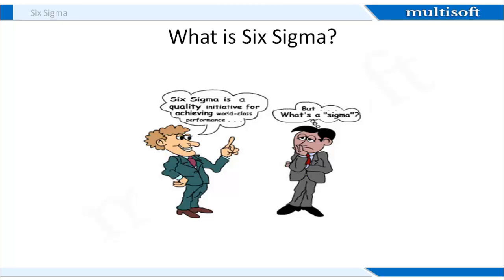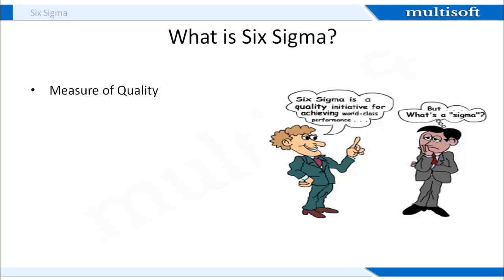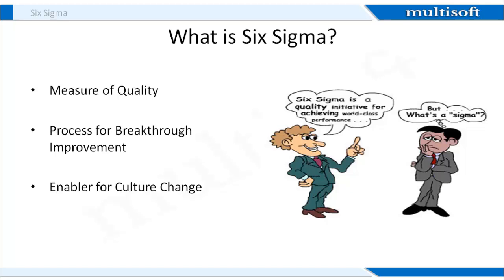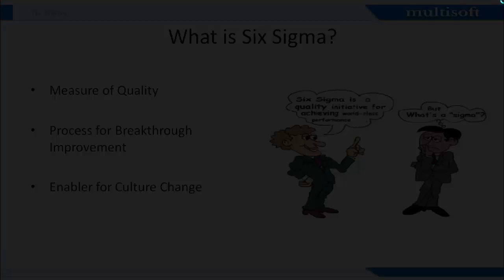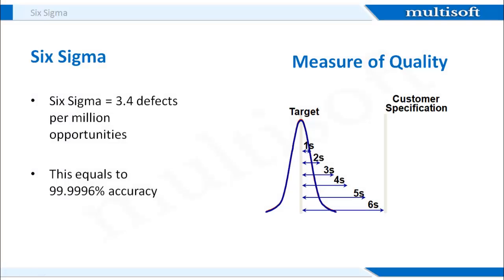Six Sigma is defined in three ways. It is a measure of quality, a process for breakthrough improvement, and an enabler for culture change. What we mean by Six Sigma as a measure of quality is that in a Six Sigma process, the total defects allowable are only 3.4 parts in a million. To achieve Six Sigma, a process must not produce more than 3.4 defects per million opportunities, which means the process has to be 99.99% perfect.